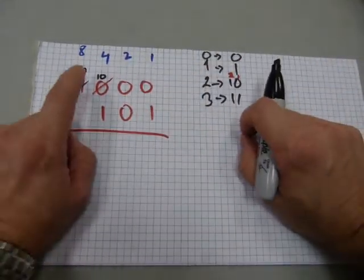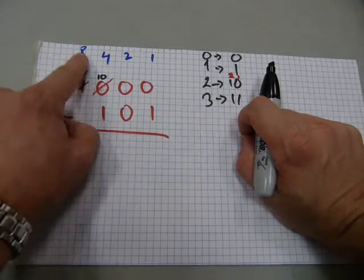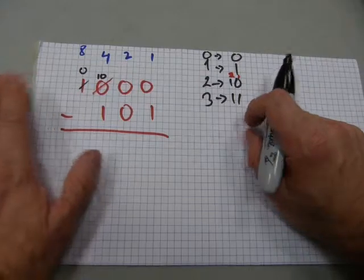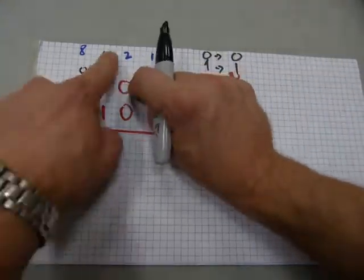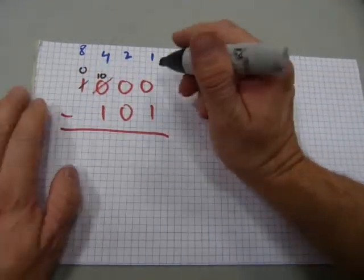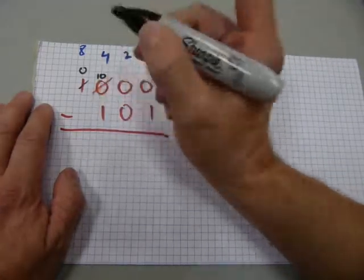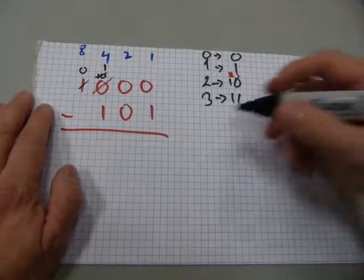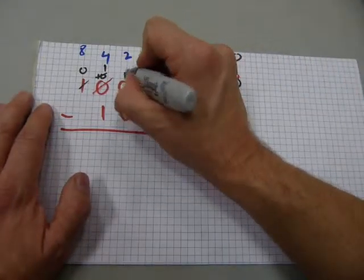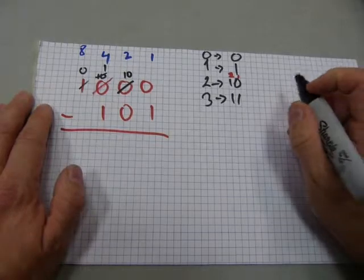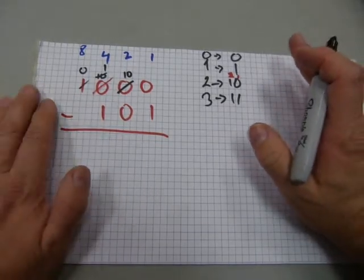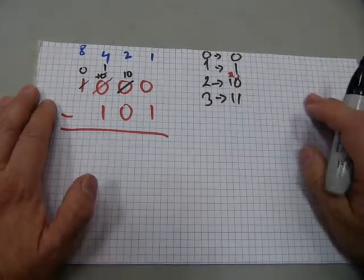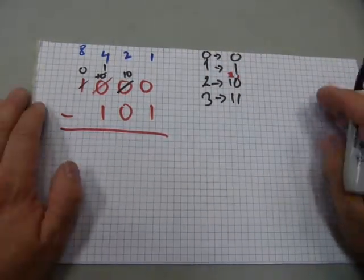So now instead of one eight-dollar denomination we have two fours — that's still eight. But I also need something in the twos column, so I'll take one four away and split it into two twos. One four and two twos is still eight — a four-dollar denomination and two two-dollar denominations, that's still eight.